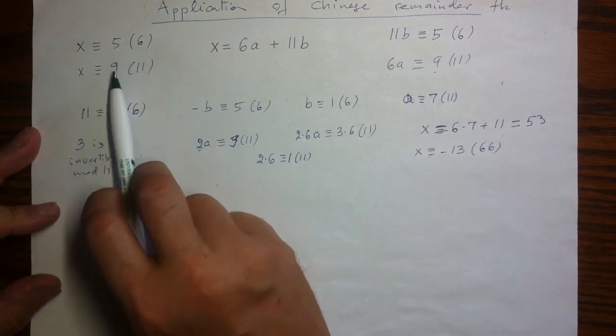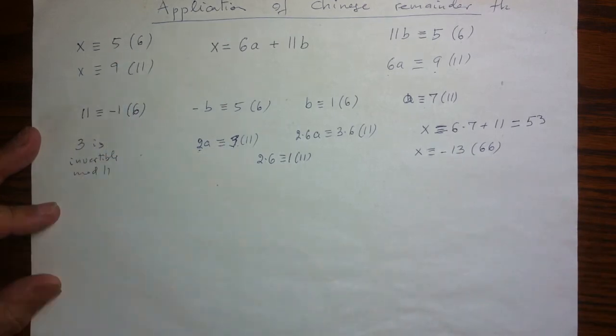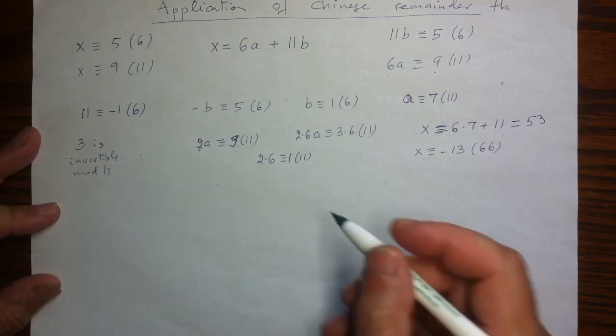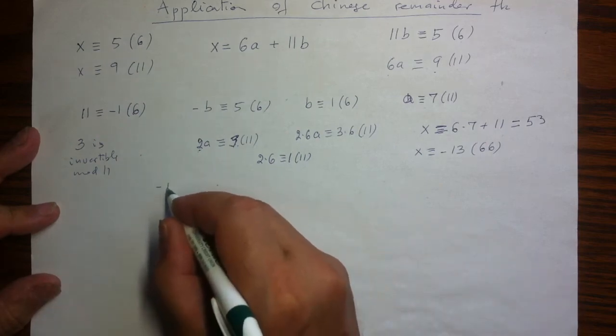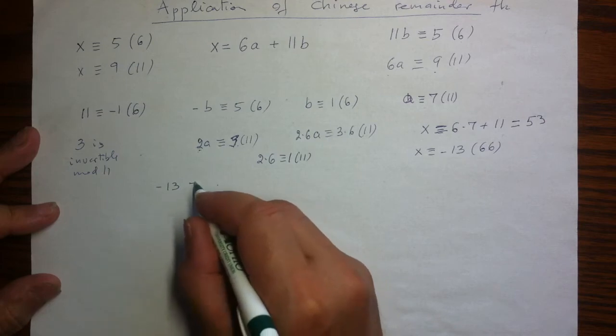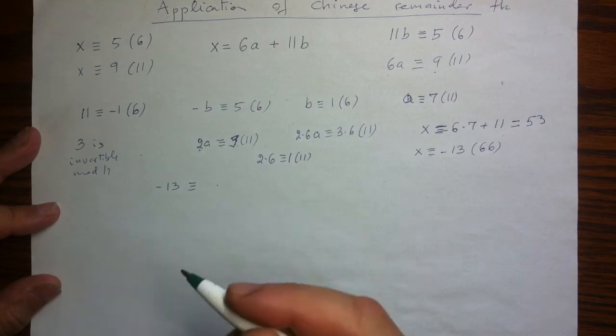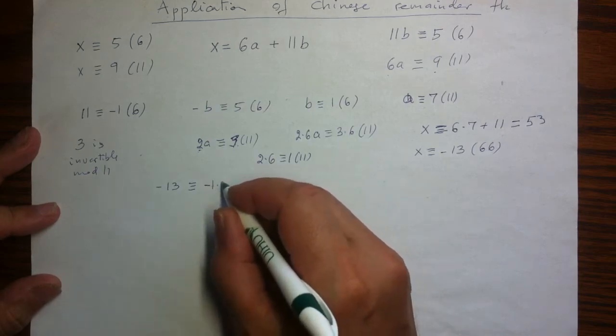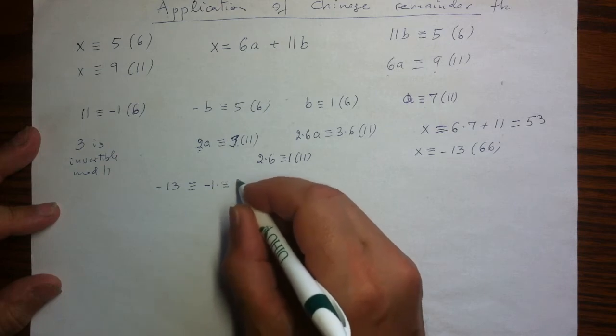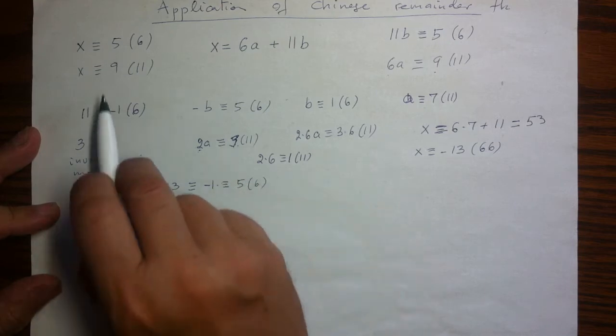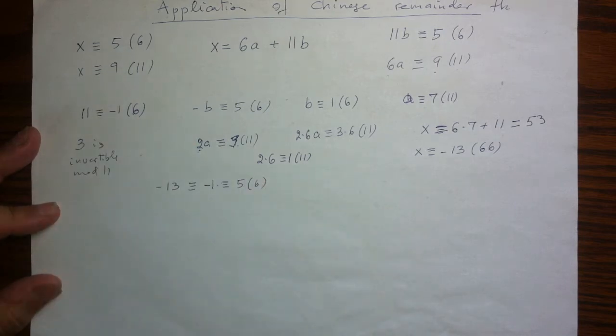I have to reduce it mod 6 and mod 11 and see that the conditions are met. So if I start with negative 13, mod 6 I can add 12. 12 is a multiple of 6, is 0. So I'll have negative 1, which mod 6 is as good as 5. And I verified the first condition.